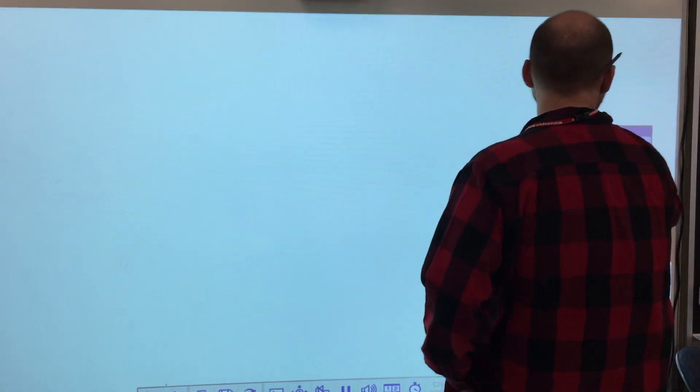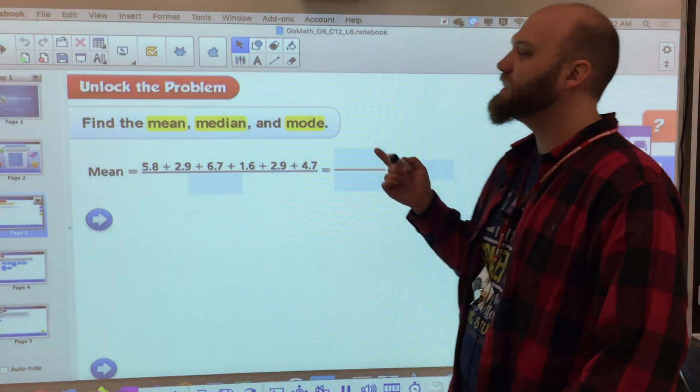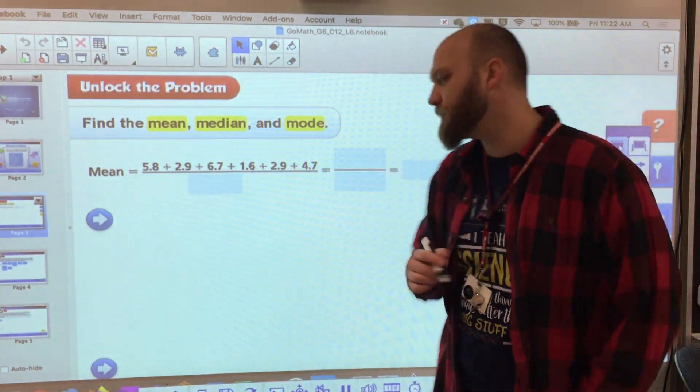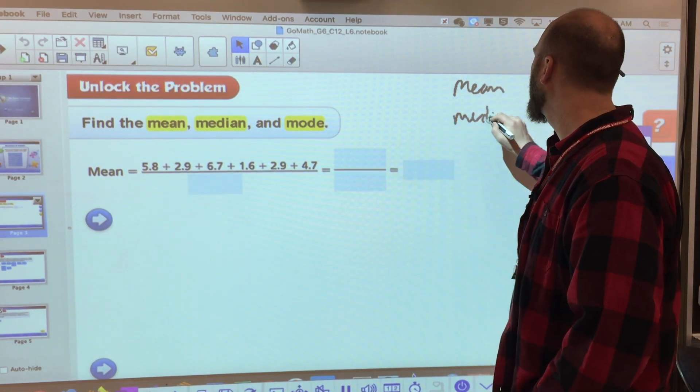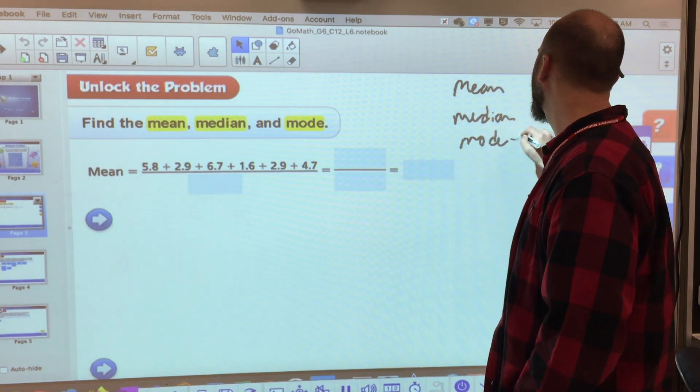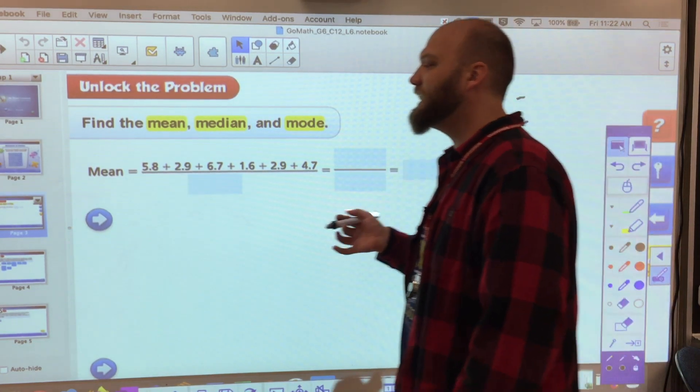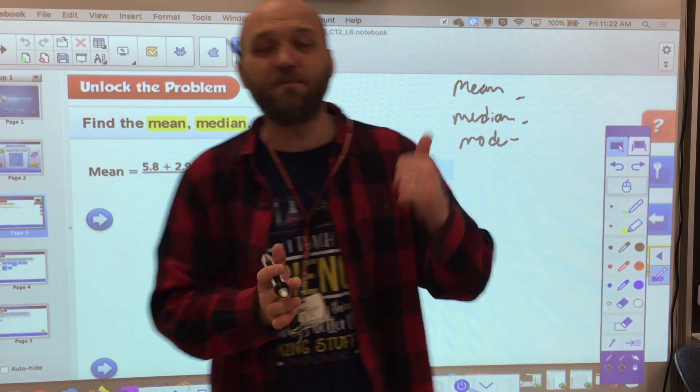So let's take a second and let's look in your book. The first thing you're going to see is to find the mean, the median, and the mode. So that's what I need to find. Well, first, they have me finding the mean.